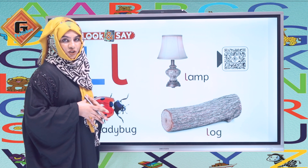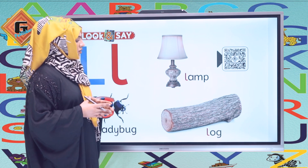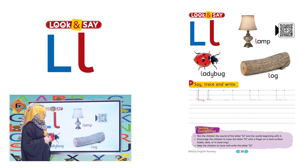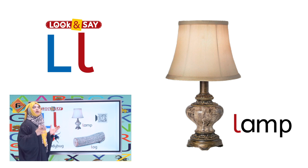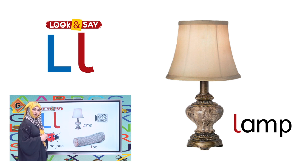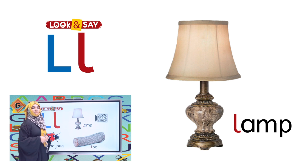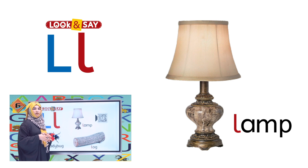Ab hum yeh dekhte hain humari book pe humari paas kya kya hai jo L se start ho raha hai. Sab se pehli yeh dekhen — what is this? This is very beautiful. Lamp! This is a lamp. Lamp — lamp. Hum isko kab use karte hain? Hum isko rakhte hain apne side table pe ya kisi corner mein, ya phir yeh hota hai humari study table ke upar.